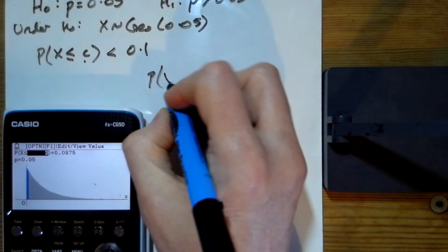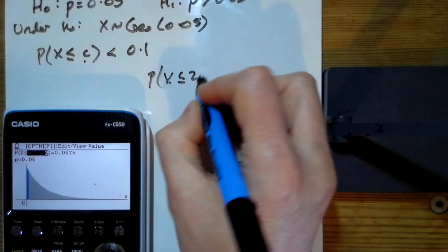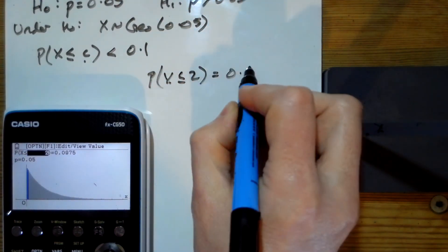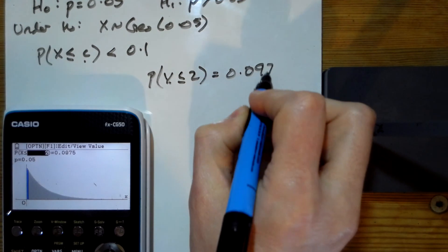And there we've got what we need. So the probability that X is less than or equal to 2 equals 0.0975.